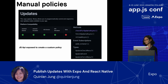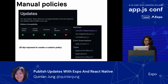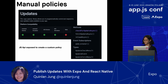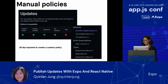And if you aren't happy with any of the policies that come out of the box, you can roll your own. In our updates module, we've exposed a JavaScript API so you can create your own custom policy. For example, there are methods to check for new updates, to reload your app, or to fetch an update.